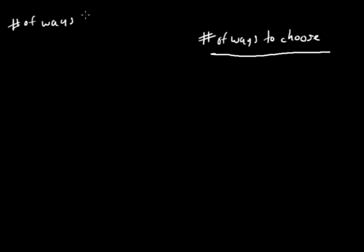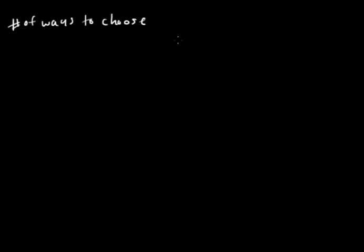Okay, so what we need to do is first set up our probability, what we're trying to figure out, which would be the number of ways to choose one red and one black card. I'm going to rewrite this because I'm running out of room. We need to find that out.